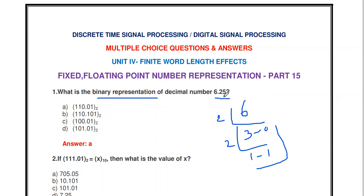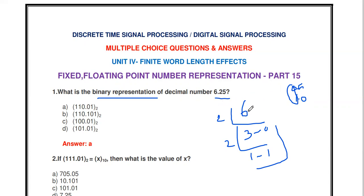For the fractional part, 0.25, we multiply by 2. 0.25 × 2 = 0.5; then 0.5 × 2 = 1.0. We continue this process until the fractional part is zero, writing down the whole-number parts: 0, then 1. So the binary representation of 0.25 is 0.01. Combined, the binary representation of 6.25 is 110.01.